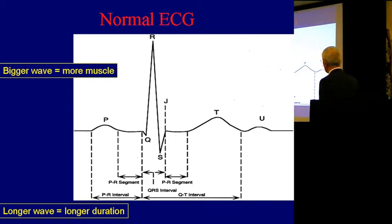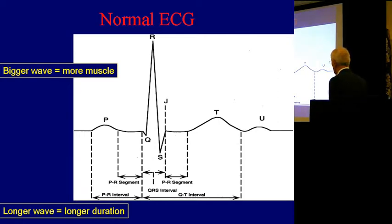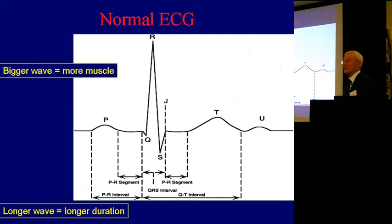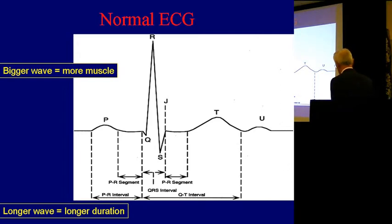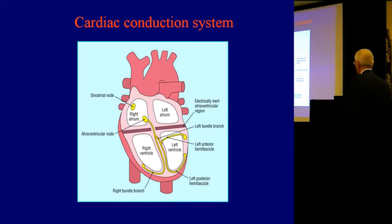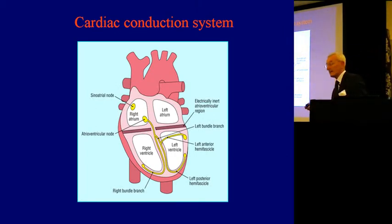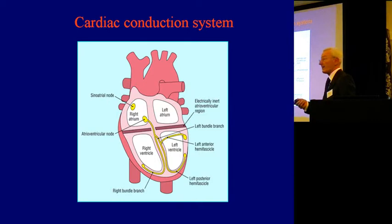Generally speaking, the bigger the wave, the more muscle has activated it. And the longer the wave, the longer it's taken the electricity to pass through the heart. And each phase of the heart generates a different bit of the squiggle. The wiring system of the heart is very simple. It's far more complicated to wire a house, believe me.